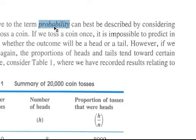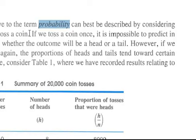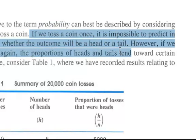They say if we toss a coin once, it's impossible to predict in advance with certainty whether the outcome will be heads or tails. However, if we toss the coin again and again, the proportion of heads and tails tend towards certain fixed values. That seems to make sense.